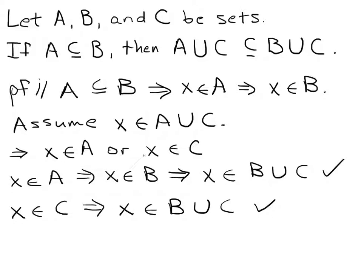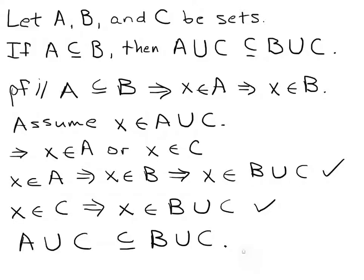Notice, no matter which option we choose, we get to the same conclusion: X belongs to the union of B and C. In either case, X belongs to the union of the two sets. So we can say that if X belongs to A union C, then it is also true that X belongs to B union C. We've proven what we wanted to prove, and that is that A union C is a subset of B union C. That's our proof.